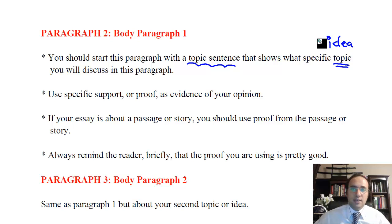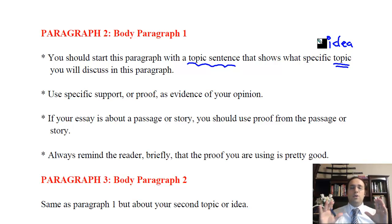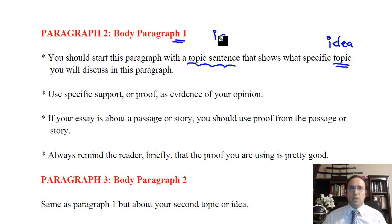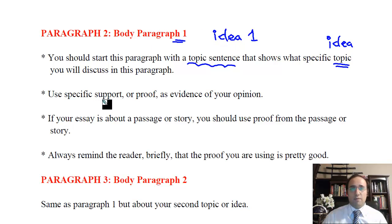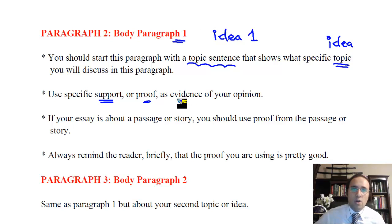— what specific idea you will discuss in this paragraph. So if you have three different proofs to prove your point of view and you're using one in each paragraph, you need a topic sentence like a small introduction in the beginning of paragraph number two, your first body paragraph, talking about idea one or topic number one.